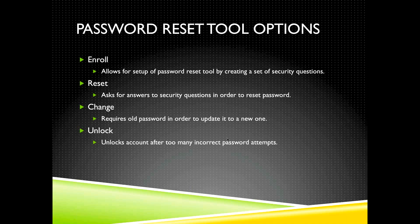The Unlock tool is the last of the four options. If you try to log in to an SMU computer or SMU email and it says your account is locked or your password is invalid, the Unlock tool is always a good first option to try. You click Unlock, enter your ID number, and answer your security questions. Unlike the Reset tool, it won't ask you to create a new password — it simply unlocks your account so you can log in with your current password again.